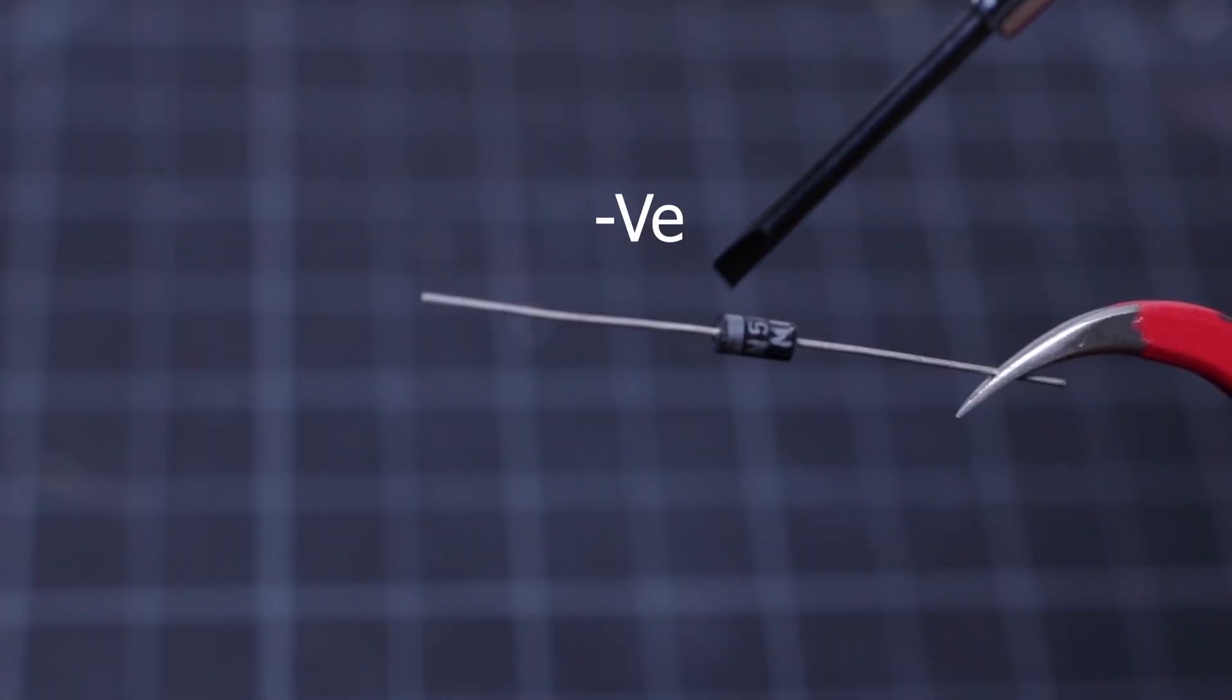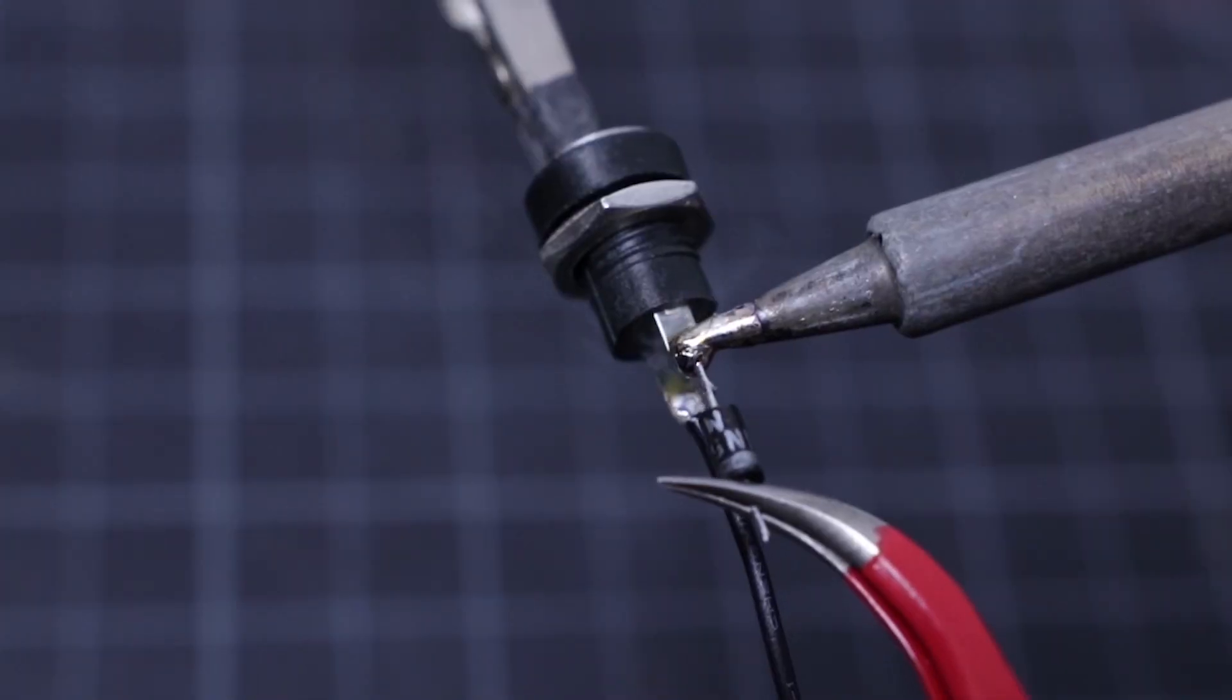I have soldered a Schottky diode to the positive terminal of the DC jack to avoid the reverse current flow.